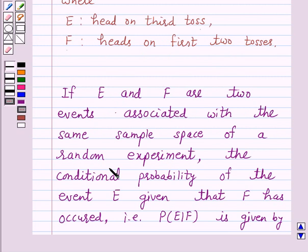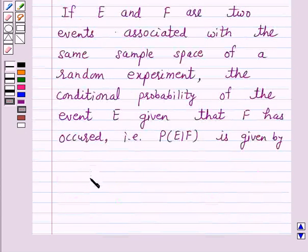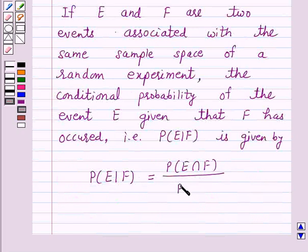Now we know that if E and F are two events associated with the same sample space of a random experiment, the conditional probability of the event E given that F has occurred, that is probability of E upon F, is given by P(E|F) equals P(E∩F) upon P(F).